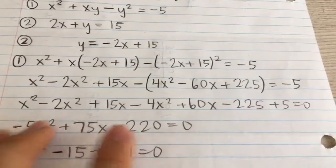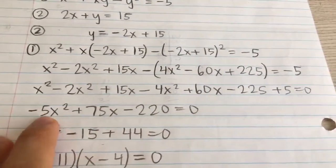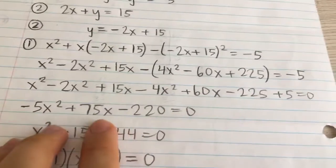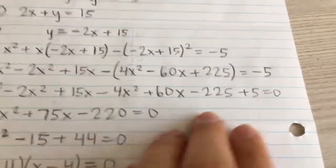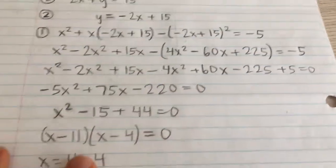Let's collect some like terms. For x squared, I have 1 minus 2 minus 4, so that's negative 5x squared. I have plus 15 plus 60, so that's 75x. And for the constants, I have negative 225 plus 5, so that's negative 220. Here's my quadratic equation.